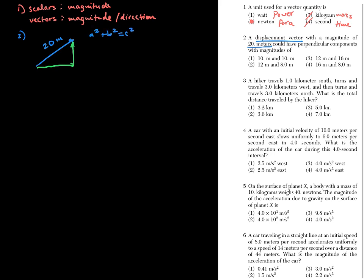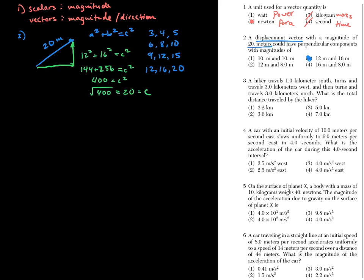One strategy is to go through each choice. Another is to remember Pythagorean triples. The classic is 3, 4, 5. You can scale it up: double gives 6, 8, 10; triple gives 9, 12, 15; quadruple gives 12, 16, 20. That's the answer — choice three. You can verify with the Pythagorean theorem: 12 and 16 are the perpendicular legs giving a resultant displacement of 20.